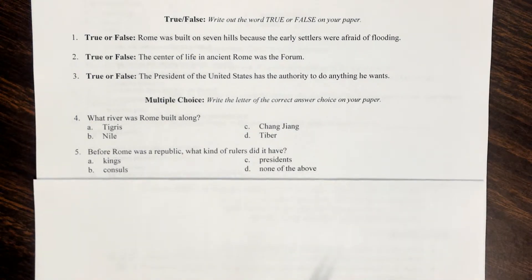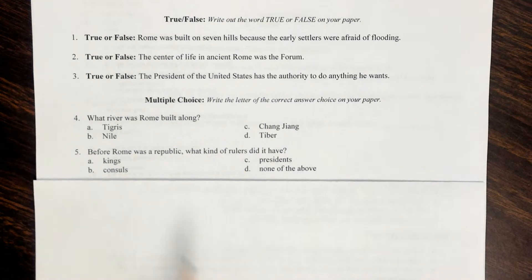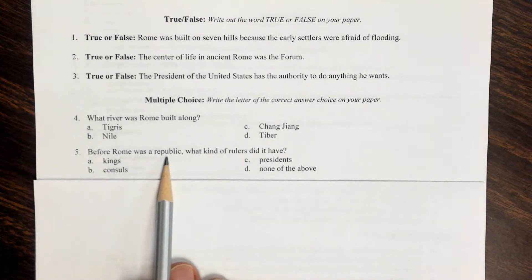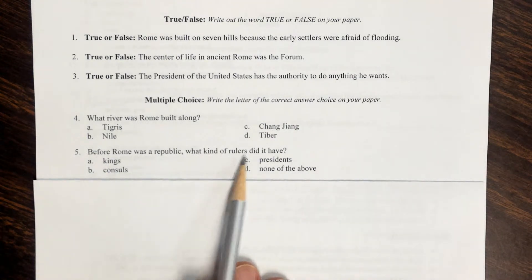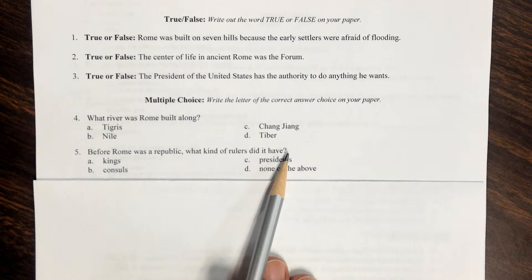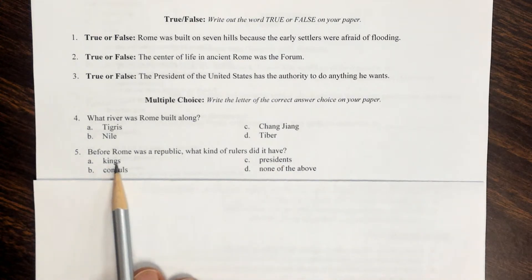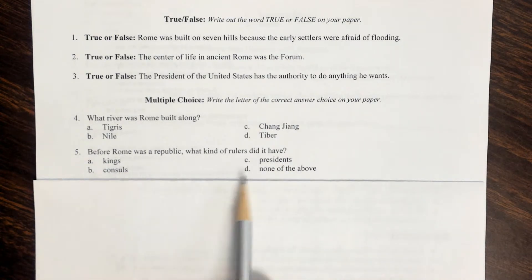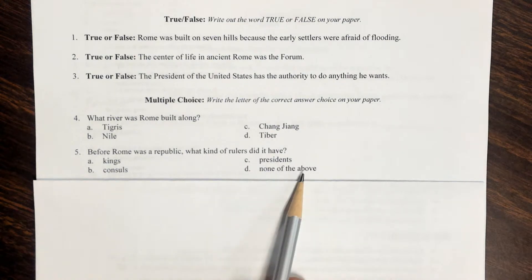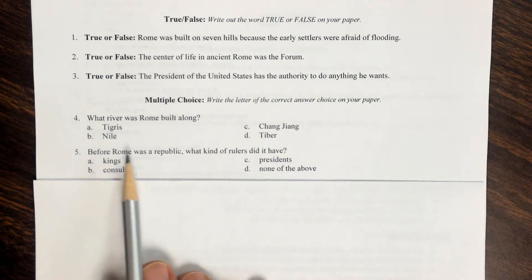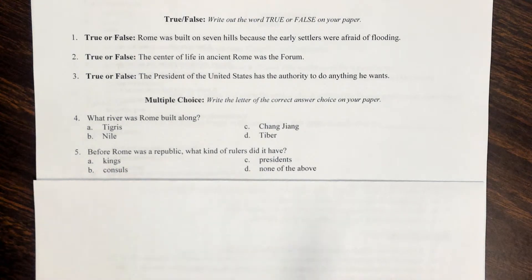Number five: Before Rome was a republic, what kind of rulers did it have? A. Kings, B. Consuls, C. Presidents, or D. None of the above — before Rome was a republic.